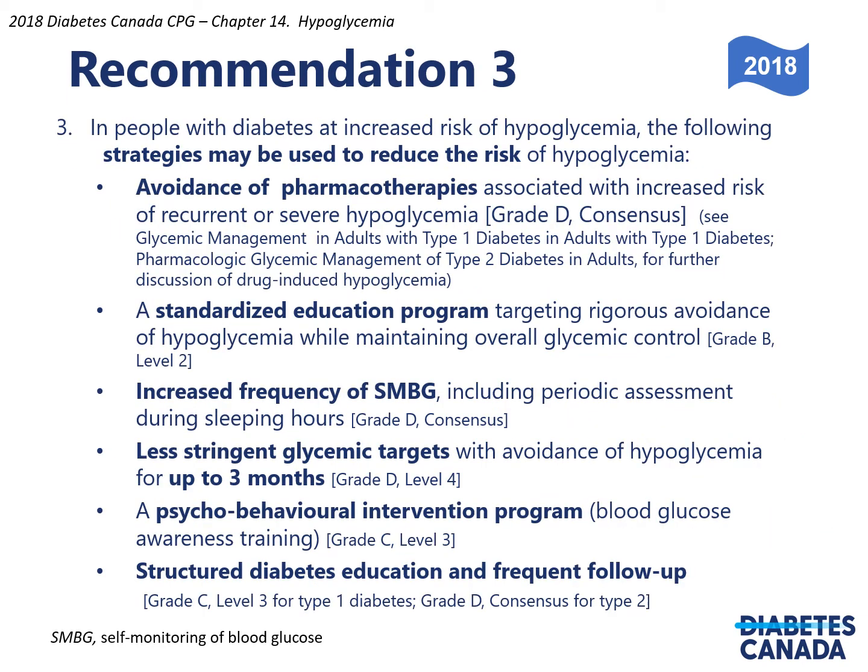Recommendation 3: In people with diabetes at increased risk of hypoglycemia, the following strategies may be used to reduce risk: avoidance of pharmacotherapies associated with increased risk of recurrent or severe hypoglycemia; a standardized education program targeting rigorous avoidance of hypoglycemia while maintaining overall glycemic control; increased frequency of self-monitoring of blood glucose including periodic assessment during sleeping hours; less stringent glycemic targets with avoidance of hypoglycemia for up to three months; a psycho-behavioral intervention program or blood glucose awareness training; and structured diabetes education with frequent follow-up.